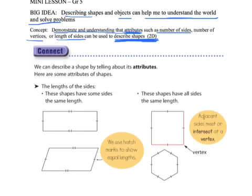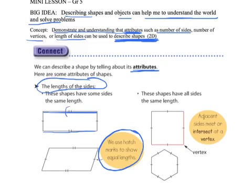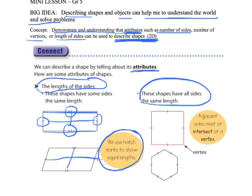We can describe a shape by telling about its attributes. One attribute could be the length of the sides. These shapes have some sides that are the same length. The top horizontal side and the bottom horizontal side are the same length. We often use hatch marks to show equal length — two lines and two lines meaning they are the same, one line and one line meaning those are the same. Same thing with this parallelogram: these two are equal length and these two are equal length. When all sides have the same length, they are called a regular polygon — so this would be a regular square, and this would be a regular hexagon because it has six sides.